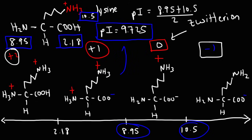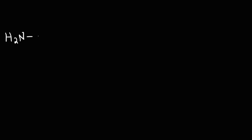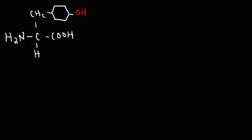Let's work on one more example. The amino acid under consideration is tyrosine. It has an aromatic ring with a hydroxyl group attached to it. The pKa of the carboxylic acid is about 2.2, for the amino group it's 9.1, and for the hydroxyl group — most phenol groups have a pKa around 10, but for simplicity let's say it's 10.5. Using this information, calculate the isoelectric point of tyrosine.